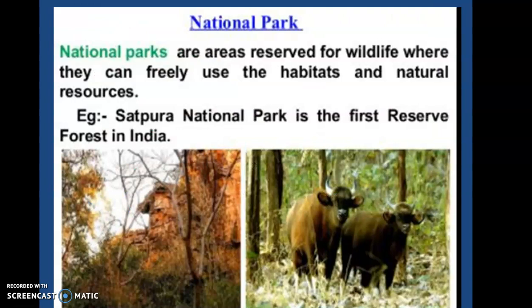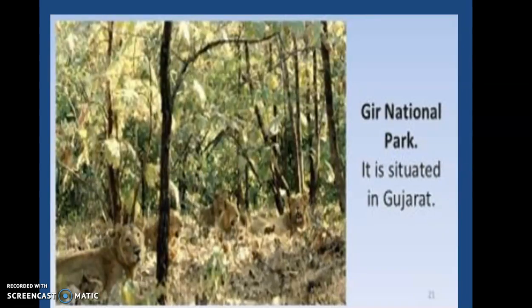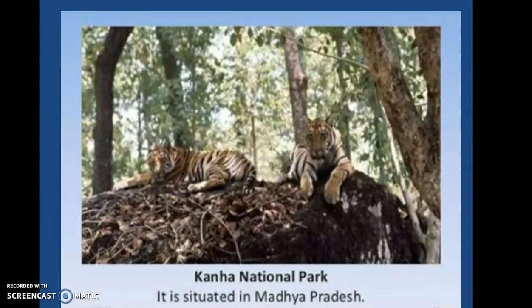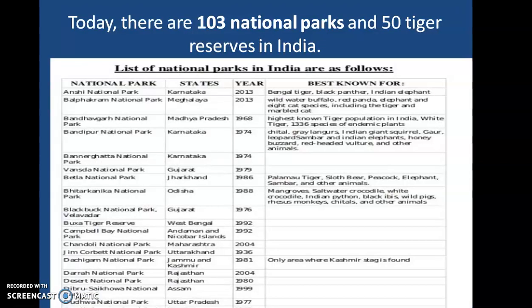Next, we talk about national parks. National parks are large areas protected and maintained by the government to preserve wildlife, where other activities like grazing and cultivation of crops are not at all allowed. National parks are areas reserved for wildlife where they can freely use the habitats and natural resources. For example, Satpura National Park is the first reserve forest in India. There are a few more examples like Gir National Park, situated in Gujarat, and Kanha National Park, situated in Madhya Pradesh.